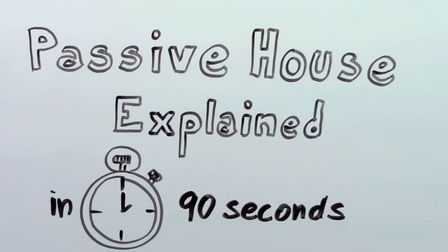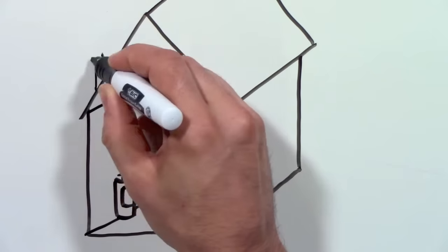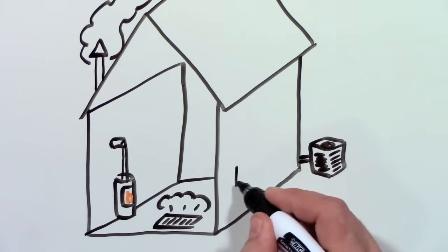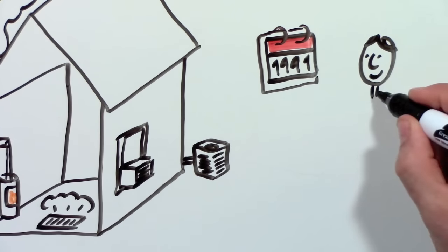Passive House explained in 90 seconds. Does your house have a heater in the basement or maybe a fireplace? Probably also a central air conditioner or maybe a window unit. Did you ever wonder if it was necessary?